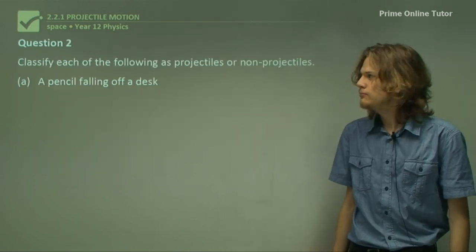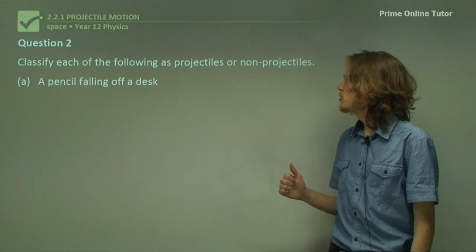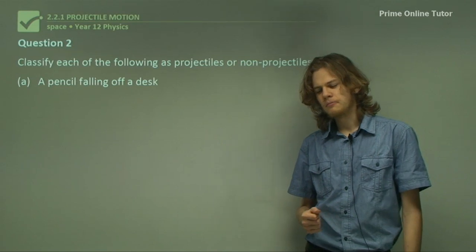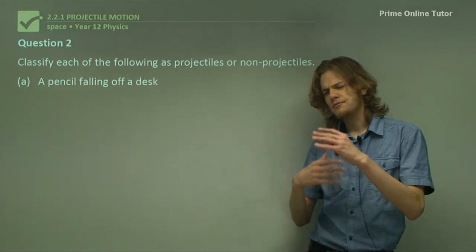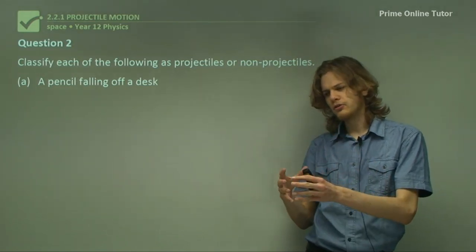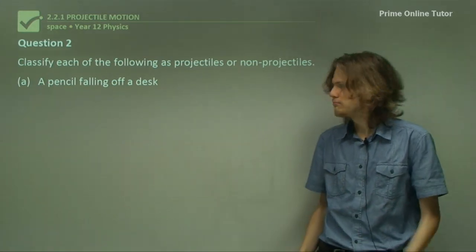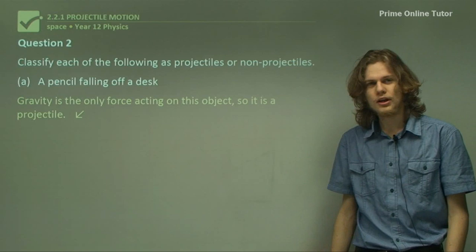Question 2. Classify each of the following as projectiles or non-projectiles. A: a pencil falling off a desk. Well, let's think about this. We have one force acting on the object, gravity, and we have it in mid-air, so it's a projectile. A pencil falling off a desk is a projectile.